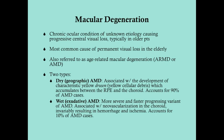Dry AMD accounts for ninety percent of AMD cases. In contrast, wet or exudative AMD is more severe and faster progressing. It's associated not as much with drusen but rather with neovascularization in the choroid, which invariably results in hemorrhage, causing scarring and ischemia. This accounts for ten percent of AMD cases.